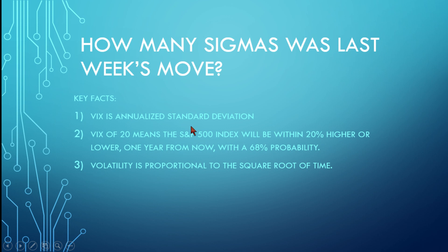Here's another key fact. Volatility is proportional to the square root of time. That's our key math metric that we're going to use to turn the VIX — which is annualized standard deviation — and convert it to a weekly volatility. That will tell us what we should expect from the market on a weekly basis, and then we can plug in what actually happened to find out how many sigmas.